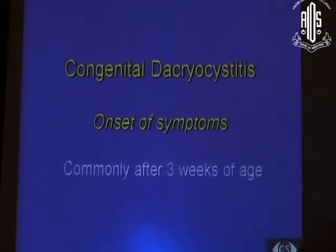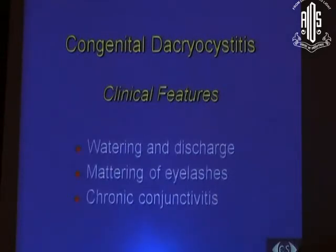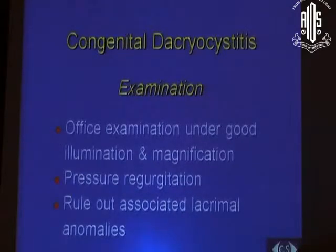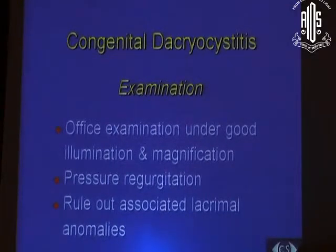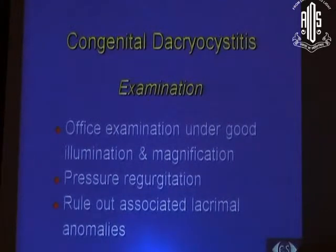Most children will start developing symptoms at about 3 weeks of age, with watering and discharge, matting of the eyelashes, and some even have chronic conjunctivitis. When a child comes in with pediatric epiphora, pseudo-epiphora, punctal, and canalicular problems have to be ruled out by a good office examination with magnification.